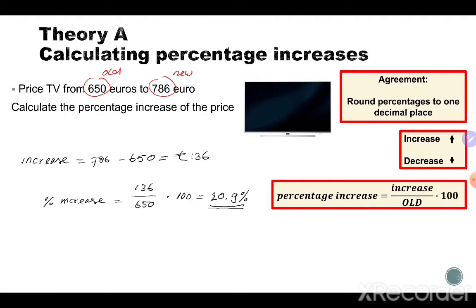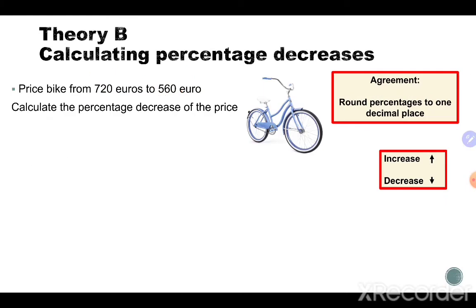Now let's have a look at Theory B, because it looks like a different theory, but maybe we can do almost exactly the same. We're going to talk about a bicycle. The price for the bike goes from 720 euros to 560 euros — calculate the percentage decrease of the price.